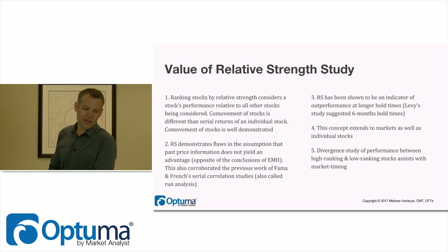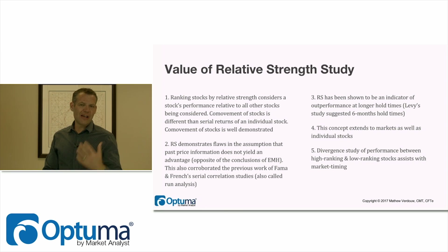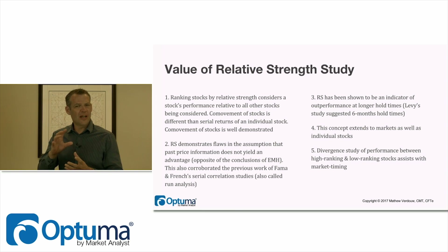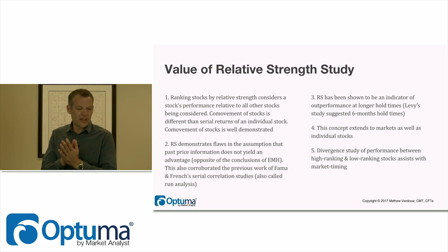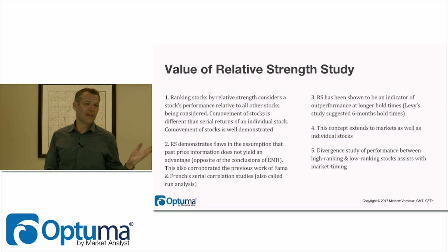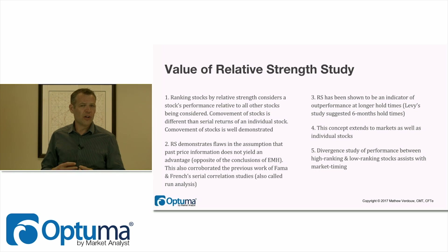The value of relative strength studies is in ranking stocks by relative strength and finding these outperformers. The text also discusses how co-movement of stocks — they tend to move together — is another big part of the relative strength study. It demonstrates flaws in the assumptions of efficient markets: the fact that the best-performing stock on a relative basis continues to be the best-performing stock really flies in the face of the randomness that efficient markets would expect.